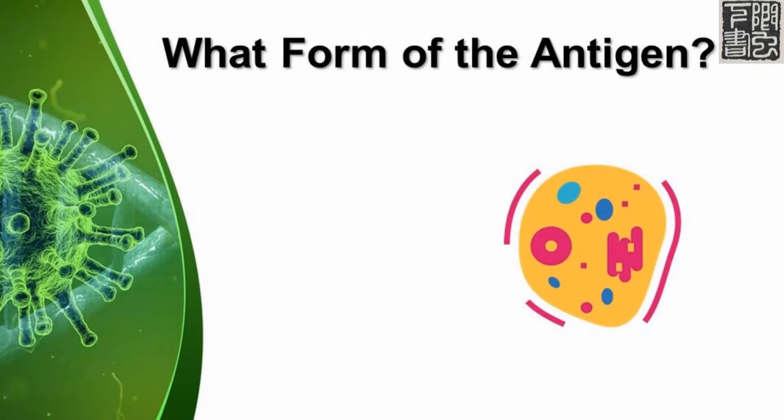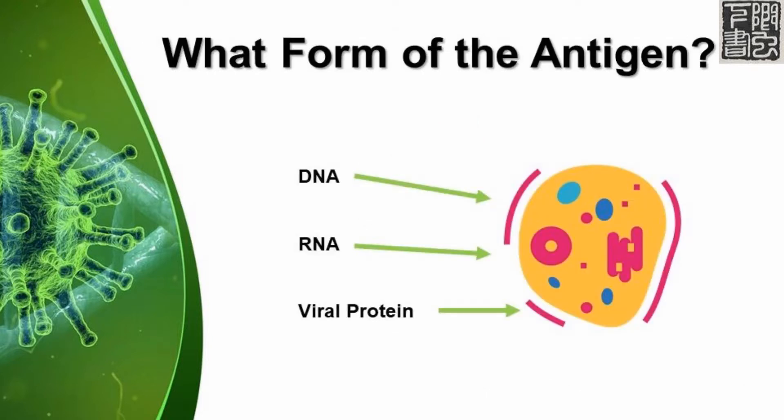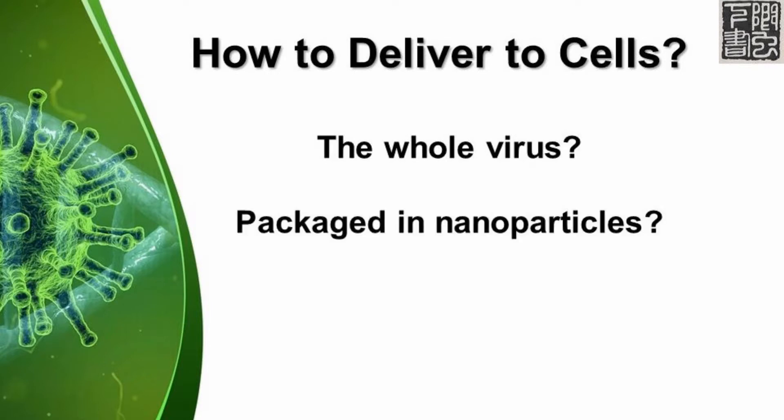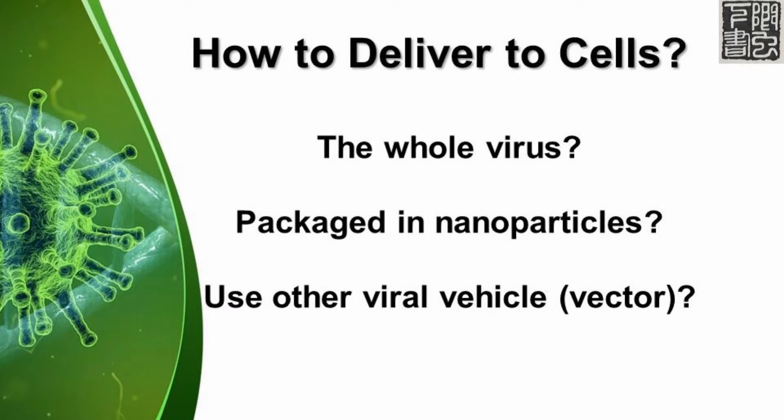Second, which form of the viral particle does the vaccine contain — viral DNA, RNA, or protein? Third, how does a vaccine enter the cell? As whole COVID viruses packaging the COVID genetic material in nanoparticles, or have the COVID gene piggyback onto another virus or vector?